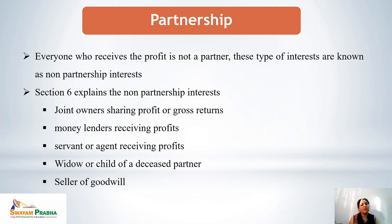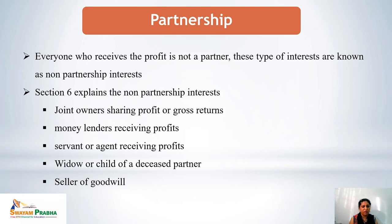Section 6 of the Partnership Act explains non-partnership interests. Non-partnership interest includes joint owners sharing profit or gross returns. Money lenders receiving profits out of the business are not partners. Servants or agents receiving part of the profit are not partners. The widow or child of a deceased partner receiving a share is not a partner. Similarly, a seller of goodwill who sold their goodwill and receives a share of profits cannot be treated as a partner in the firm.